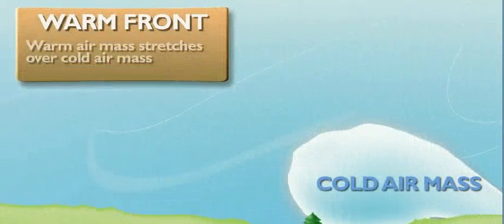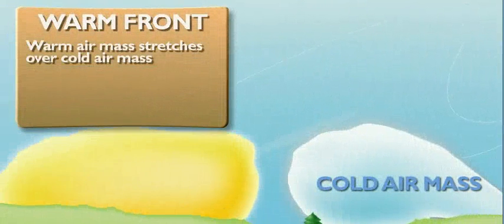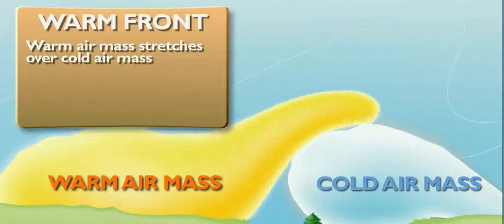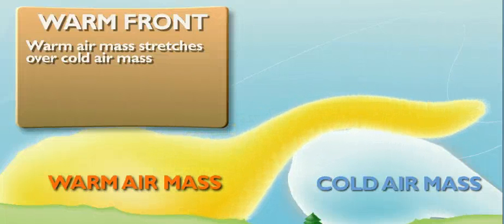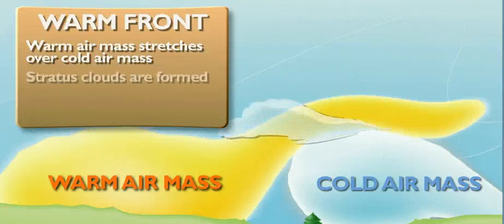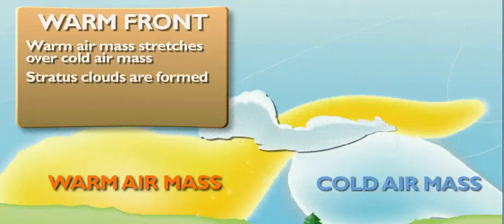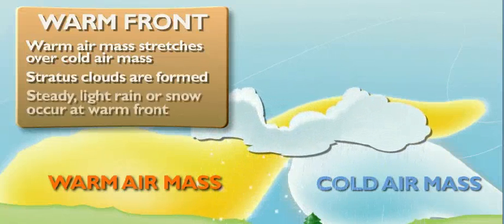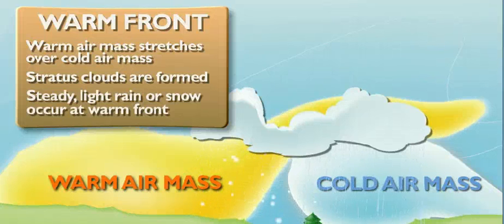What happens at a warm front? A warm front happens when a warm air mass catches up with a cold air mass and slowly climbs up and over it. As the warm air mass passes over the cold air, long, thin stratus clouds stretch out across the sky. A warm front can cause rain and snow too, but it's light and steady, not heavy and stormy like a cold front's weather.